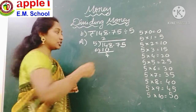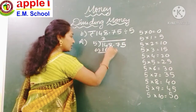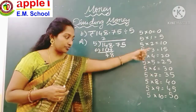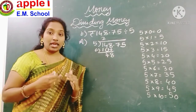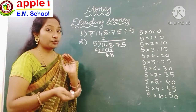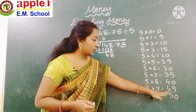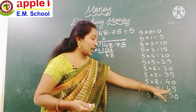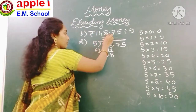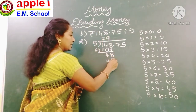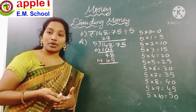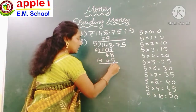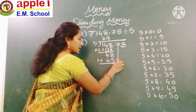Bring down the next digit. Now check whether you will get 48 in the 5 times table — no. Take the smallest nearest to 48: 50 is greater than 48, so take the one above: 5 nines are 45. Do the subtraction: 48 minus 45 is 3.